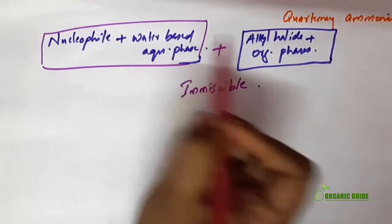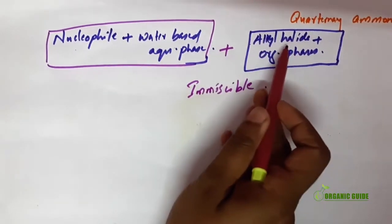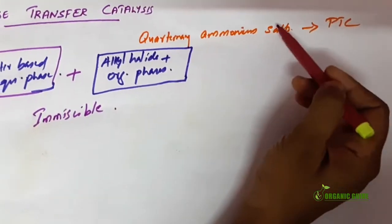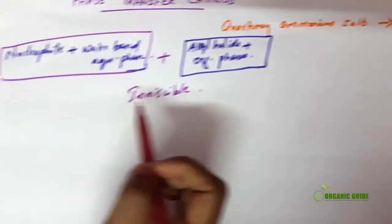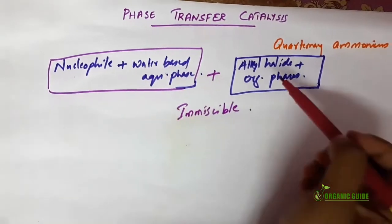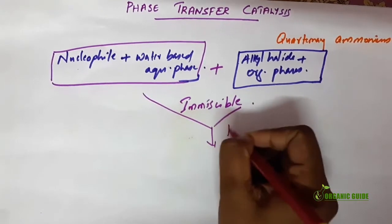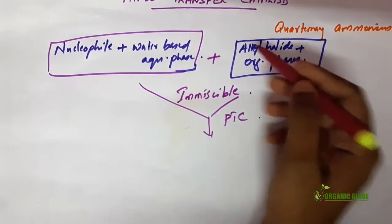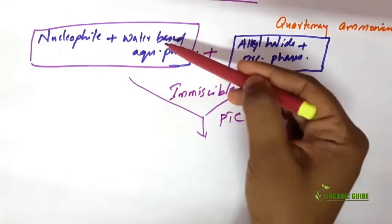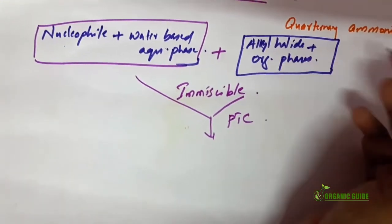The nucleophile is in aqueous phase and alkyl halide is in organic phase, so both are immiscible. Then how can this nucleophile react with this alkyl halide? It is impossible. Here comes the role of the phase transfer catalyst such as quaternary ammonium salt. We dissolve the nucleophile in an aqueous solvent and alkyl halide in an organic phase, then add the phase transfer catalyst to both media. This helps in the transfer of the nucleophile from one phase to another, and we get the product.